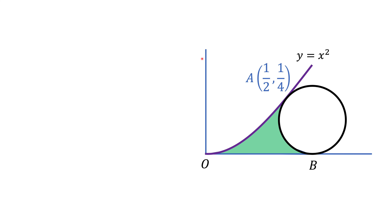First of all, we have a coordinate system here — a vertical axis and a horizontal axis. We have a parabola, y equals x squared, and we have a circle. The circle is tangent to the parabola at point A and tangent to the horizontal axis at point B. We are asked to find the green area between the parabola, the circle, and the horizontal axis.